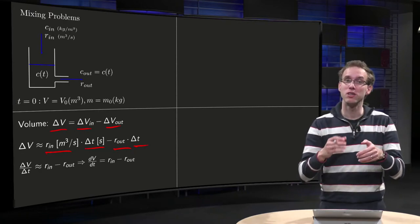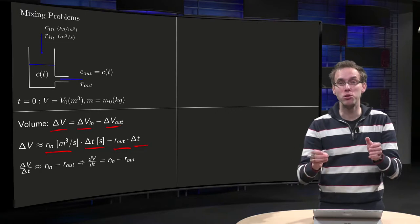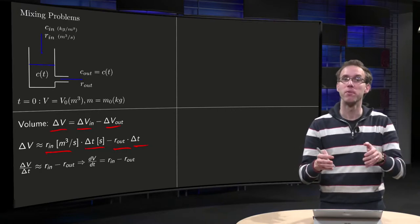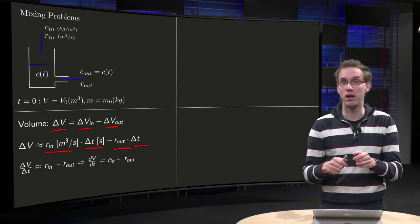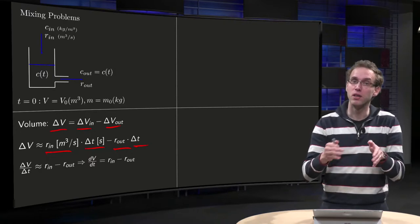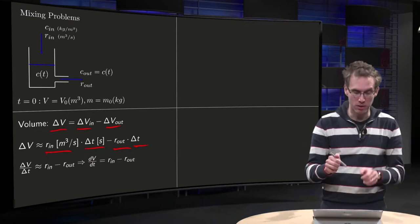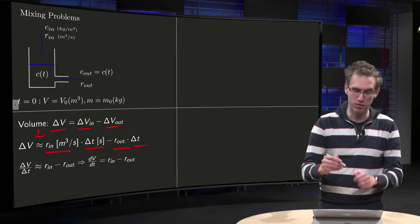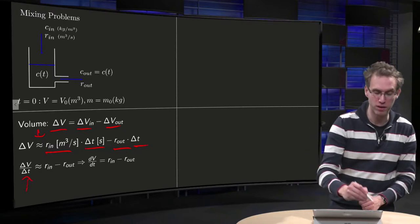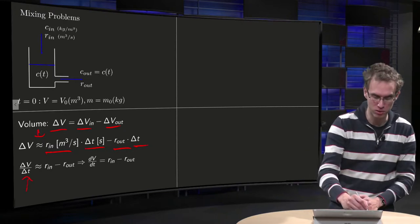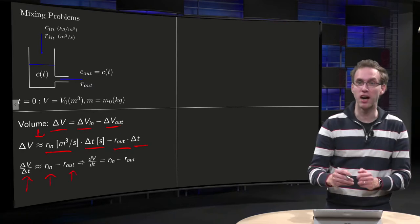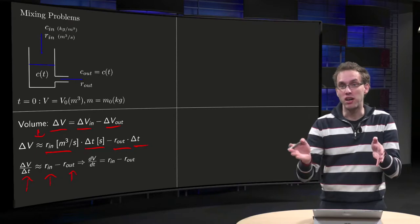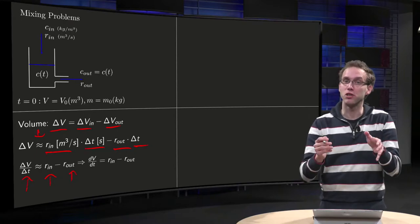Approximately equal, because those rates in and rates out could change if you close the outlet, for example, and the rate out could depend on time. So that's why the approximately equal sign is here. Then we divide by delta T, and we have delta V over delta T is approximately equal to rate in minus rate out. And it only is equal if the rate in and rate out are constant, but they are more or less constant.